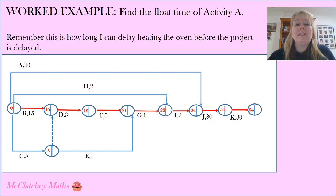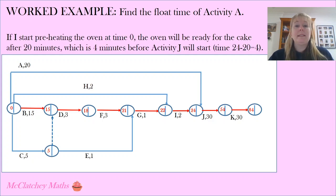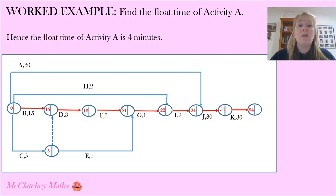The next question now is to find the float time of activity A. Remember, these are all the activities that are not on the critical path. We don't have float time on the critical path. So this is how long I can delay different activities before 84 minutes blows out. Now the first activity A is preheating my oven. So I can delay that a certain amount of time before I delay the whole project. That's a 20 minute activity. So if I start preheating that at time zero, that means the oven will be ready to put a cake inside it at 20 minutes. But that's four minutes before I actually need to put the cake in the oven because I'm not quite ready yet. So activity J starts at the 24 minute mark. That means I've got four minutes float time on activity A. So what that's effectively saying is I could delay turning the oven on for up to four minutes, anywhere up to four minutes, and I'm still going to be able to have my cake made by the 84 minute mark.